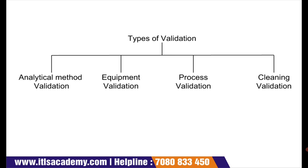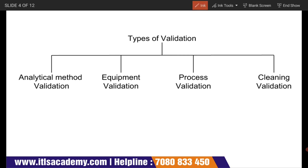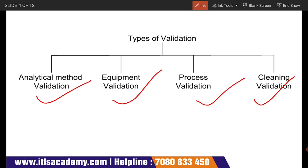Now, what are the types of validation? Validation has four types: first is analytical method validation, second is equipment validation, third is process validation, and fourth is cleaning validation. We divide validation into these four parts.